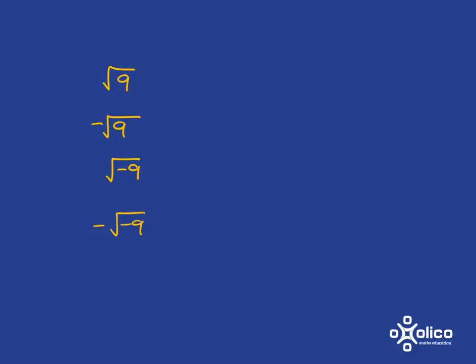Now, if we move on to square roots — what does the square root of 9 mean? We're asking what, multiplied by itself, gives me 9 as the answer. And hopefully that's very easy. The answer is 3.